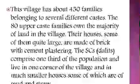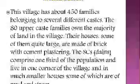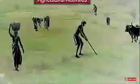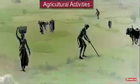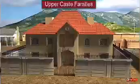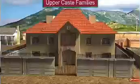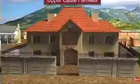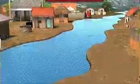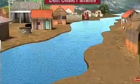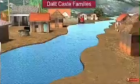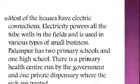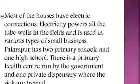What you're listening to now is a description about this hypothetical village named Palampur. Farming is the main activity of this village; some of them are also engaged in non-farming activities. You can see in this slide a pakka house — upper caste people are residing in these houses, who comprise 80% of the population. In this slide you can see kaccha houses where the Dalits are residing, with houses made of mud and straw.